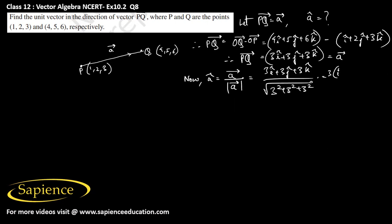This would be, from here 3 I can take it as common, 3 into I cap plus J cap plus K cap and divided by from here this we can write 3 into 3 square.